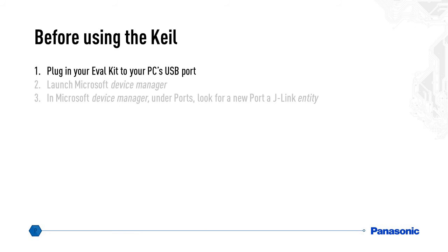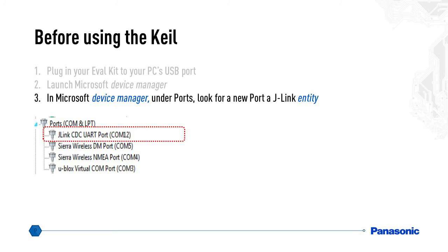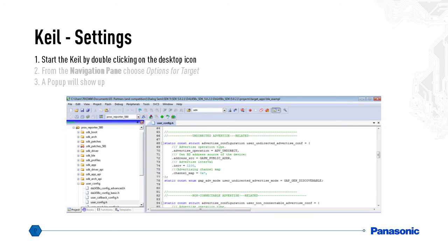Before using the Keil, plug in your eval kit to your PC's USB port and launch Microsoft Device Manager. Under Ports, look for a new port — a J-Link entity. After confirming that the J-Link is installed correctly and the driver is working, start the Keil by double clicking on the desktop icon.